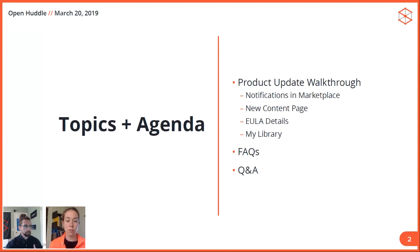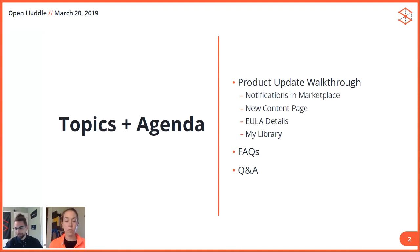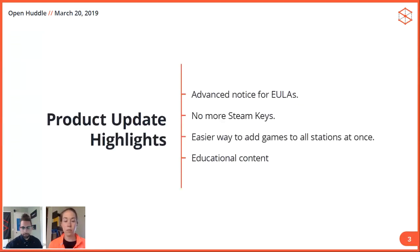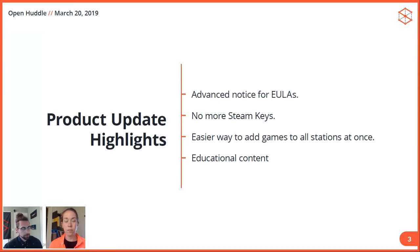Breaking it down a little bit more, the big things in Operator CDS are: EULAs through Springboard and no more Steam keys. No more going to each individual station, copy-pasting that Steam key, downloading it. It's going to be one-click — download content to all stations, all locations, all experiences, or individual stations, however you want to do it. This release is also going to include some nice educational content. I'll go ahead and turn it over to Madison to give you a walkthrough of what's changing and what's new.